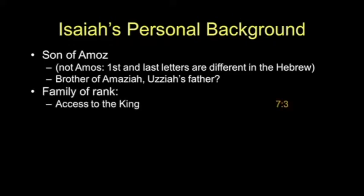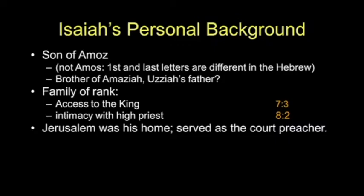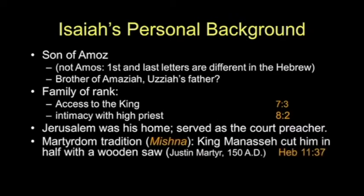He had direct access to the king, as we discover when we get to chapter 7. He had intimacy with the high priest. He's going to be distinctive in the sense that he actually has a court position as a prophet. Prior to him, prophets were assigned to a person — Nathan for David, and so forth. But Isaiah really had royal standing before the king in a very unique way. Jerusalem was his home, and he was the court preacher.